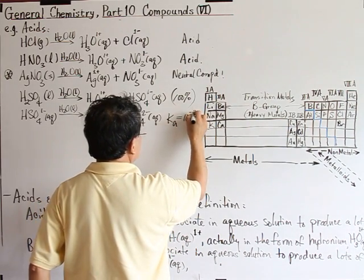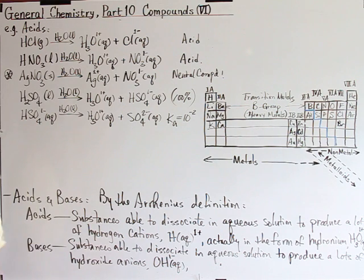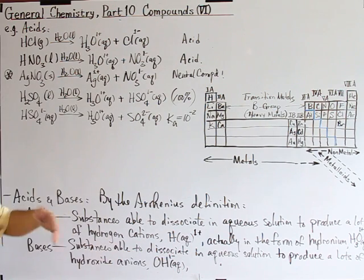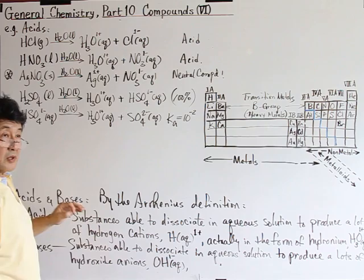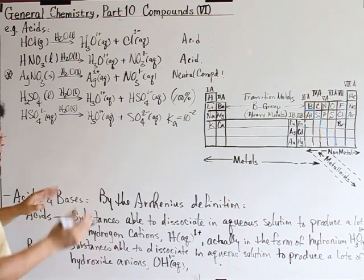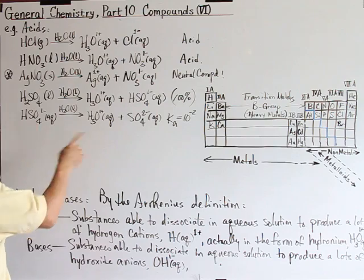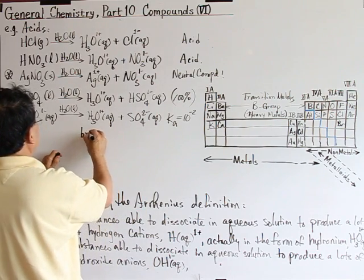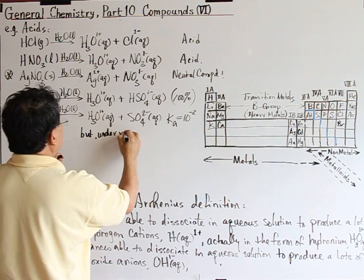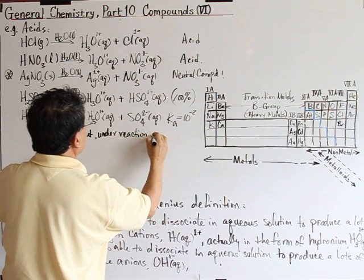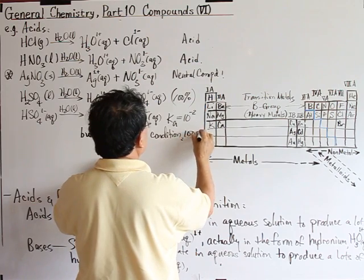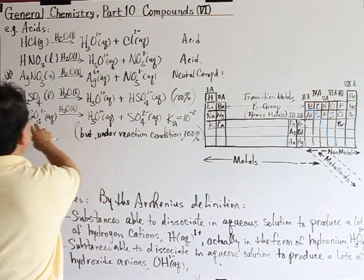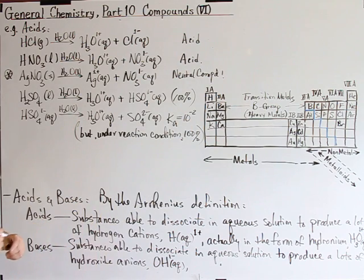It's about 10 to the minus two. Each moles of hydrogen sulfate solution, you can have 0.01 moles, 10 to the minus two moles molecules being dissolved. And the rest, but under reaction condition, but under reaction condition, for instance acid-base reaction, it goes 100% dissociation. This completely. This case.